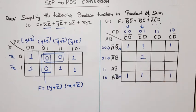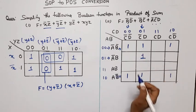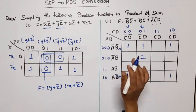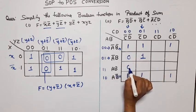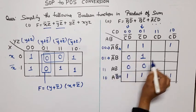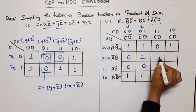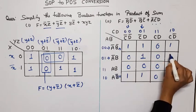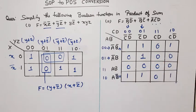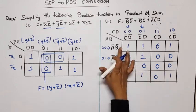Now let's simplify this into POS form. Whatever terms are absent we place zero. Now let's do their pairing. Before pairing, we read off the maxterm expressions from the zeros.